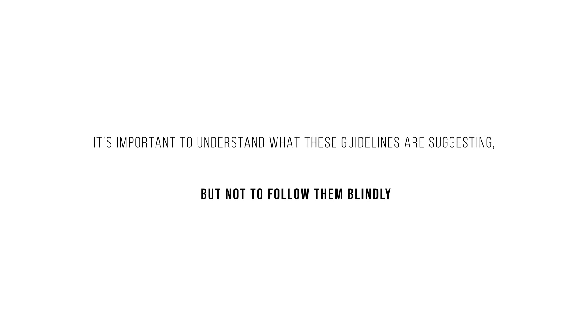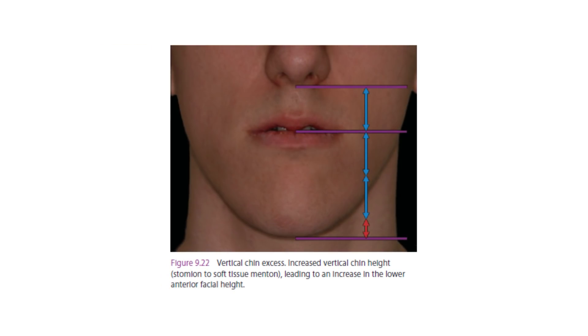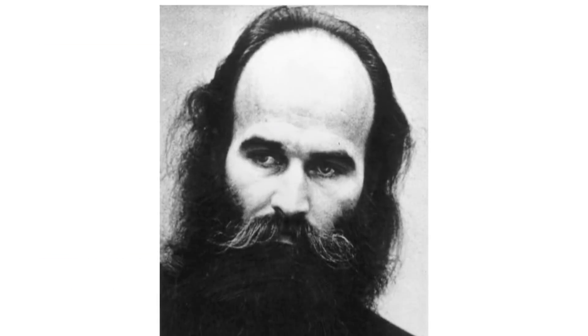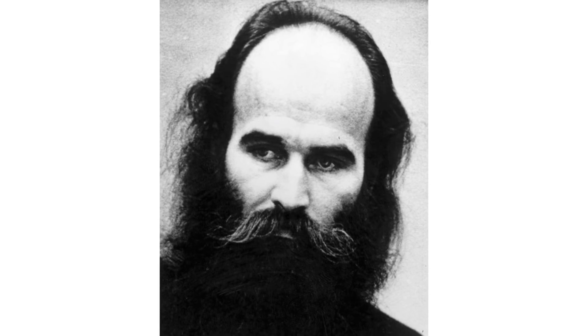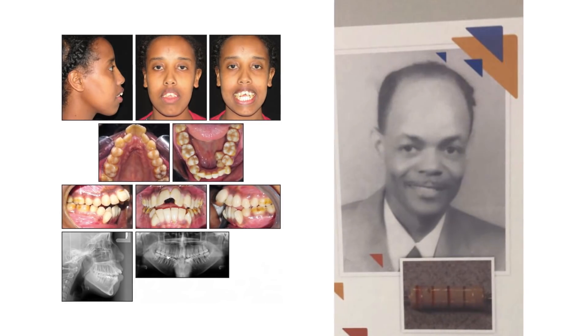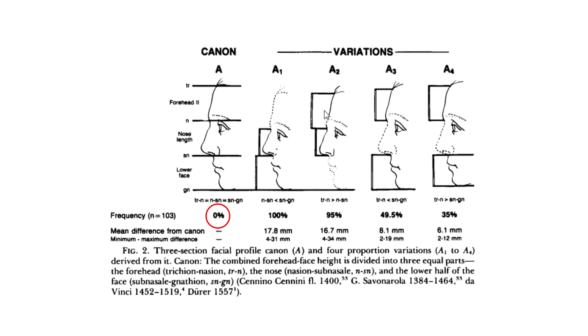It's important to understand what these guidelines are suggesting, but not to follow them blindly. Some faces can have a larger lower third naturally, or it could be due to dentofacial deformity such as vertical skeletal dysplasia. Some faces can have a larger upper third because of a recessed hairline. Both of these would be flaws that the average person or even an orthodontist in the former example would want corrected to restore better proportion. Just because the study suggests that 0% of the participants fit those neoclassical guidelines doesn't make them invalid, which is where understanding the data and having experience with potential flaws is very important.